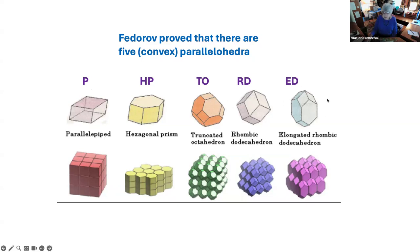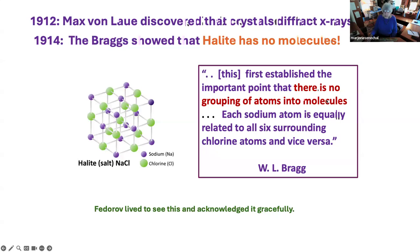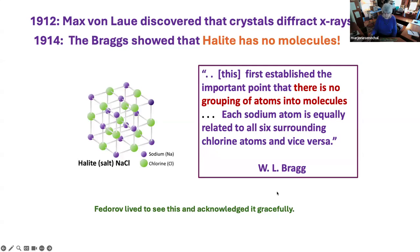In 1912, Max von Laue discovered that crystals diffract X-rays. Two years later, the Braggs showed that halite — salt — has no molecules. Bragg stated: this first established the important point there was no grouping of atoms into molecules — each sodium atom is equally related to all six surrounding chlorine atoms and vice versa. So that means there were no stereohedra necessarily. Fedorov lived to see this and acknowledged it gracefully, although his whole life's work was then put into question.